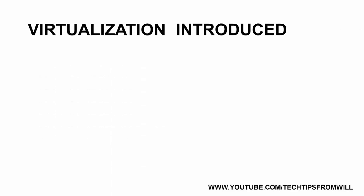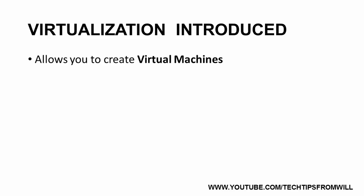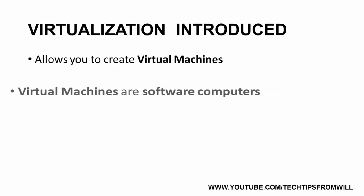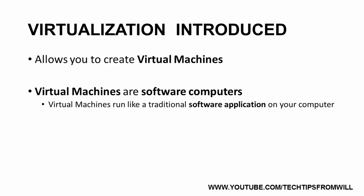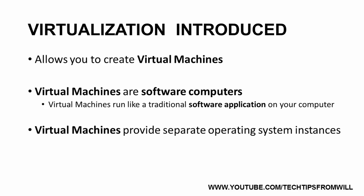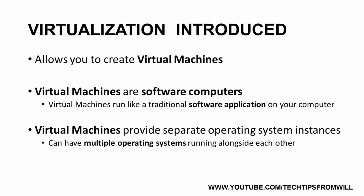That was until virtualization was introduced. Virtualization addressed many of the shortcomings of dual booting by allowing you to create virtual machines. Virtual machines, as I like to describe them, are essentially software computers. That is, a virtual machine looks and behaves just like any other software application that you have installed on your computer. Every virtual machine you create provides you with a completely separate working operating system, which means that you can have multiple operating systems running side by side on the same computer at the same time.